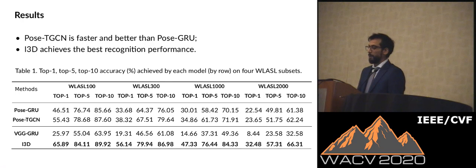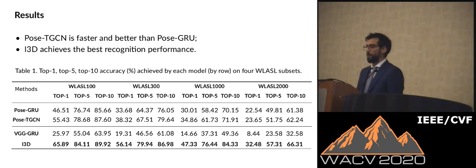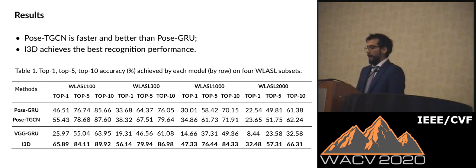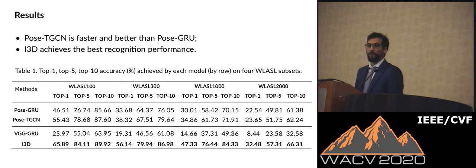In our experiments, we evaluate on different subsets of our dataset, taking 100, 300, 1000 and 2000 words as subsets. The I3D model achieved the best performance with top-10 accuracy, reaching 66% on the 2000-word subset. Our proposed pose-temporal graph convolution network consistently performed better than the GRU and achieved 62% top-10 accuracy in the same 2000-word setting. This demonstrates the richness of our dataset.